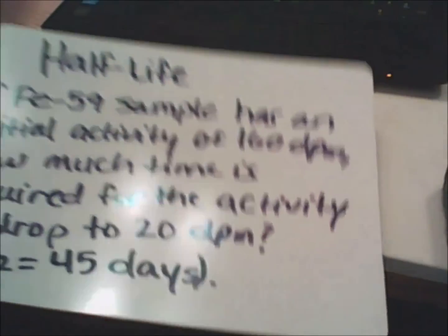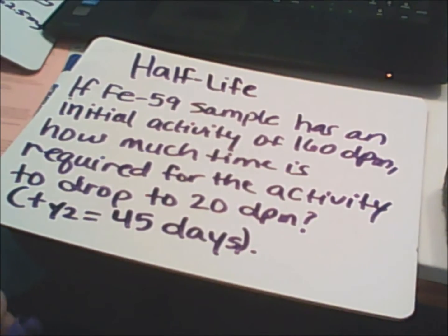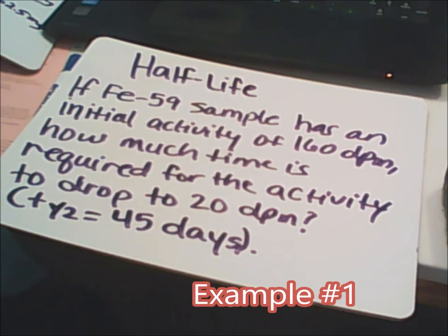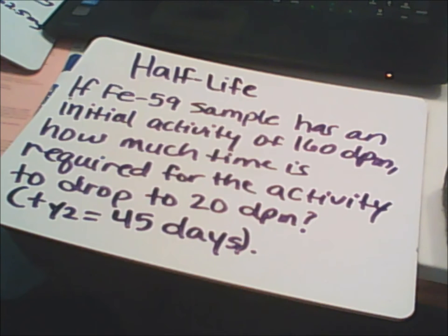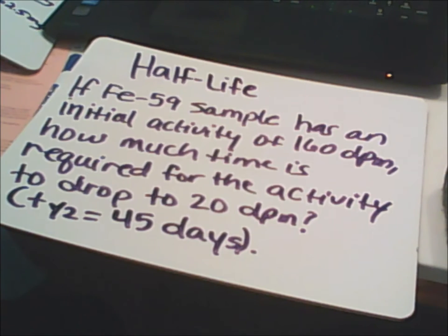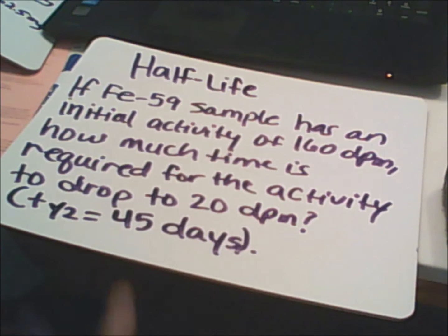Now I'm going to show you the first example that deals with half-life, and it deals with the half-life of an iron-59 sample. If an iron-59 sample has an initial activity of 160 DPMs (disintegrations per minute), how much time is required for the activity to drop to 20 DPMs? The half-life is 45 days — meaning every 45 days your sample drops from 160 down through each cycle until we reach 20.